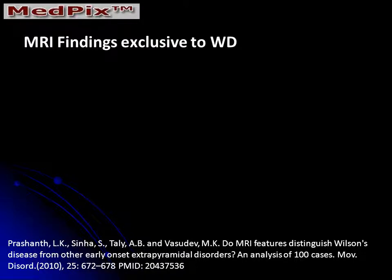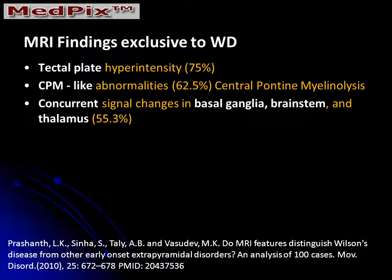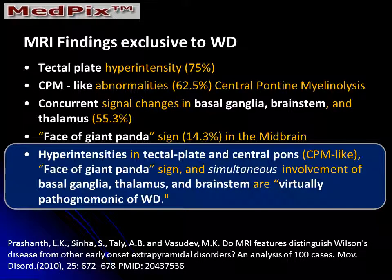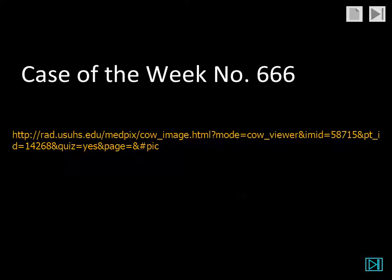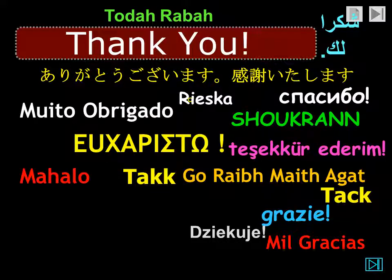The MR findings exclusive to Wilson's disease include tectal plate hyperintensity, CPM-like abnormalities in the central pons, and concurrent signal changes in the basal ganglia, brain stem, and thalamus. The face of the giant panda sign is only seen in about one out of seven patients with Wilson's disease. The hyperintensities in the tectal plate and pons and the simultaneous involvement of the basal ganglia, thalamus, and brain stem have been described as virtually pathognomonic of Wilson's disease. These features were seen in this index case. This has been MedPix case of the week number 666. You can earn CME credit by visiting our website.